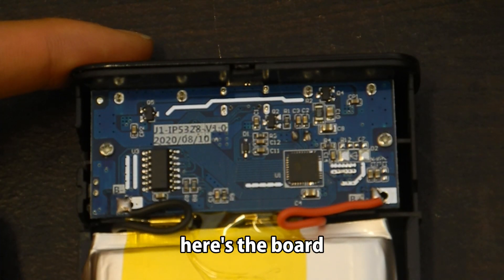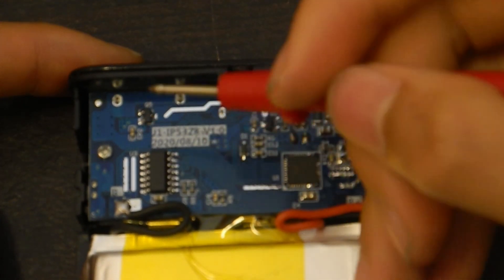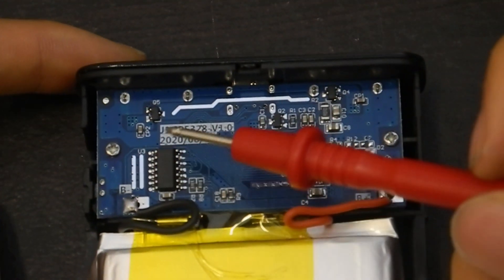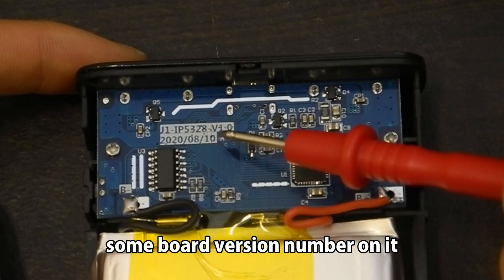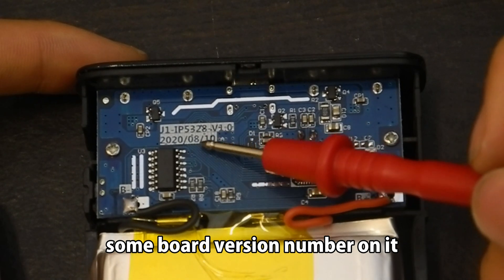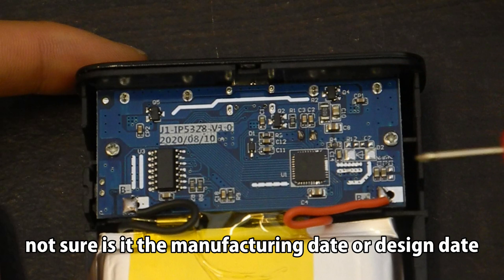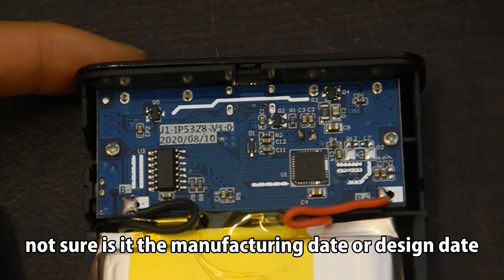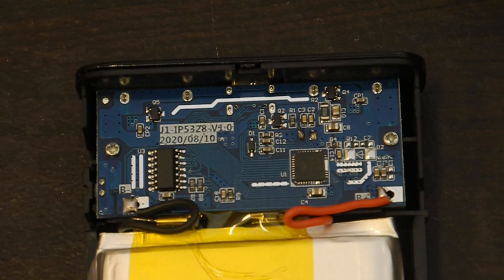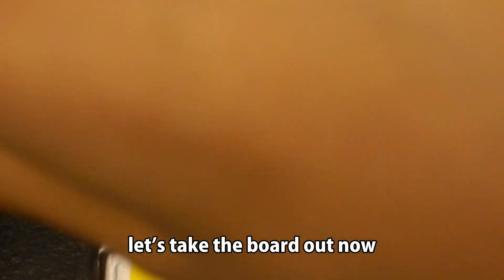Here's the board. Some board version number on it. And some date code. Not sure if it's the manufacturing date or design date. Let's take the board out now.